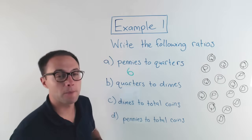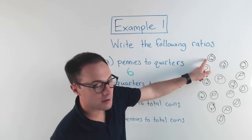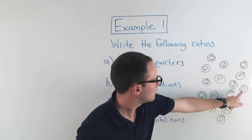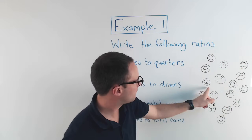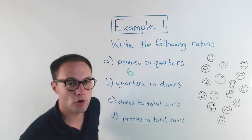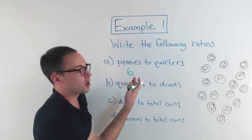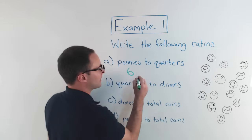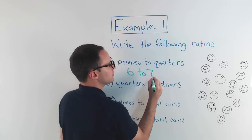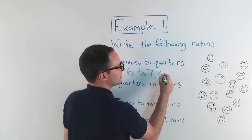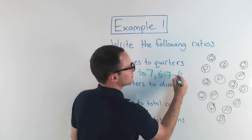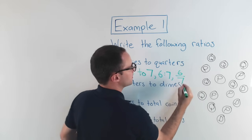Then how many quarters? Q for quarters. One, two, three, four, five, six, seven — looks like seven quarters. So I can write my ratio as six to seven, or six colon seven, or six over seven.